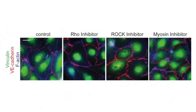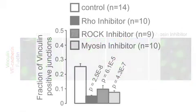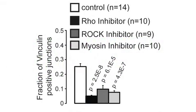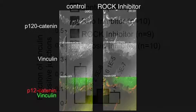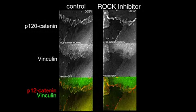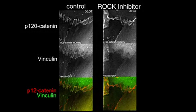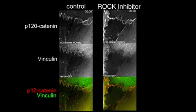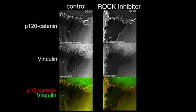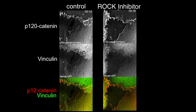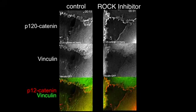All of these inhibitions prevented the formation of focal adherence junctions in the sense that there was no vinculin visible and we couldn't find these perpendicularly-oriented junctions. We think it's the force in the contractile actin that connects to the junctions, puts tension on them, and that recruits vinculin.